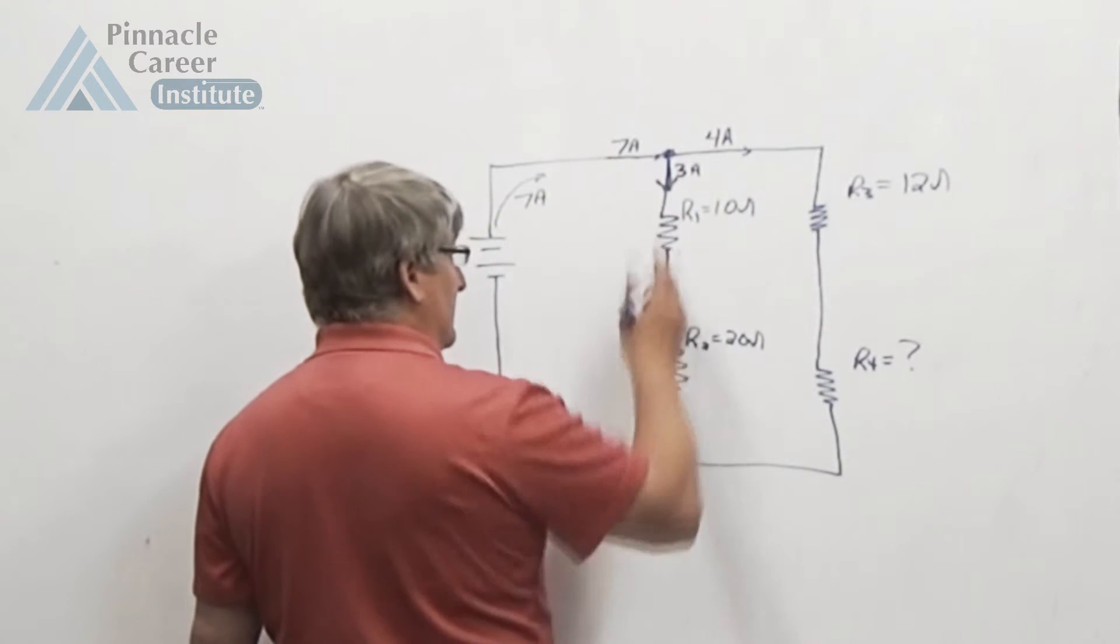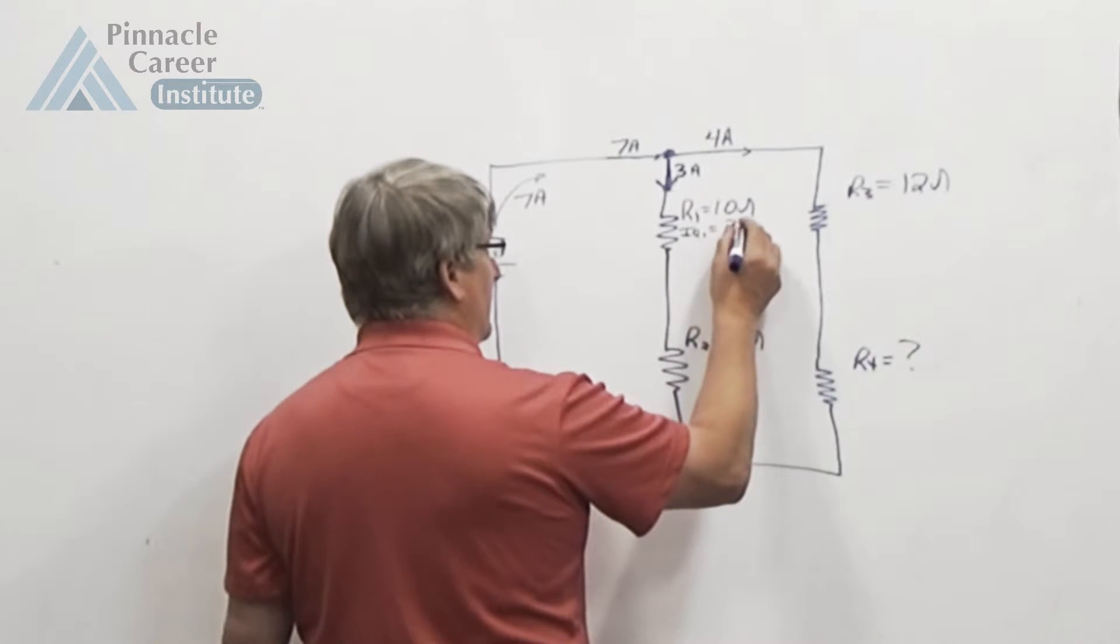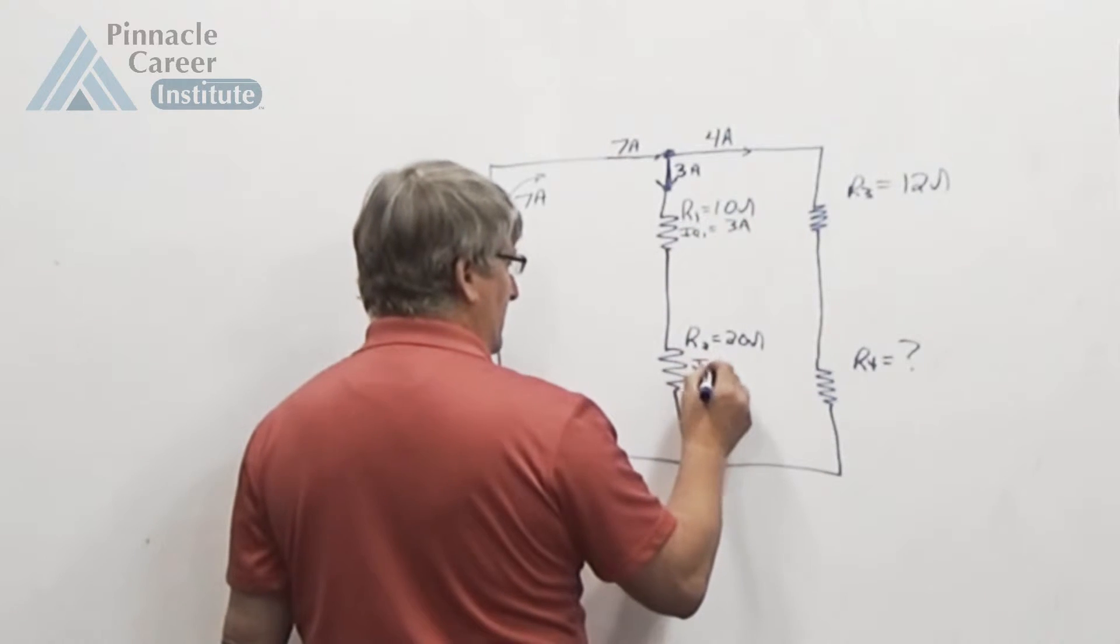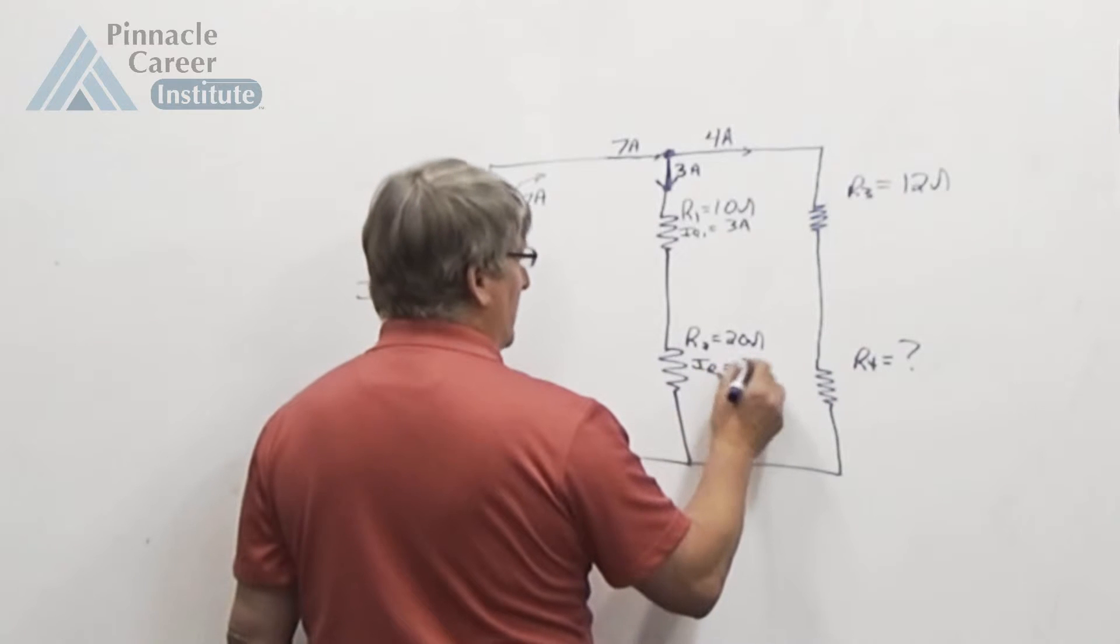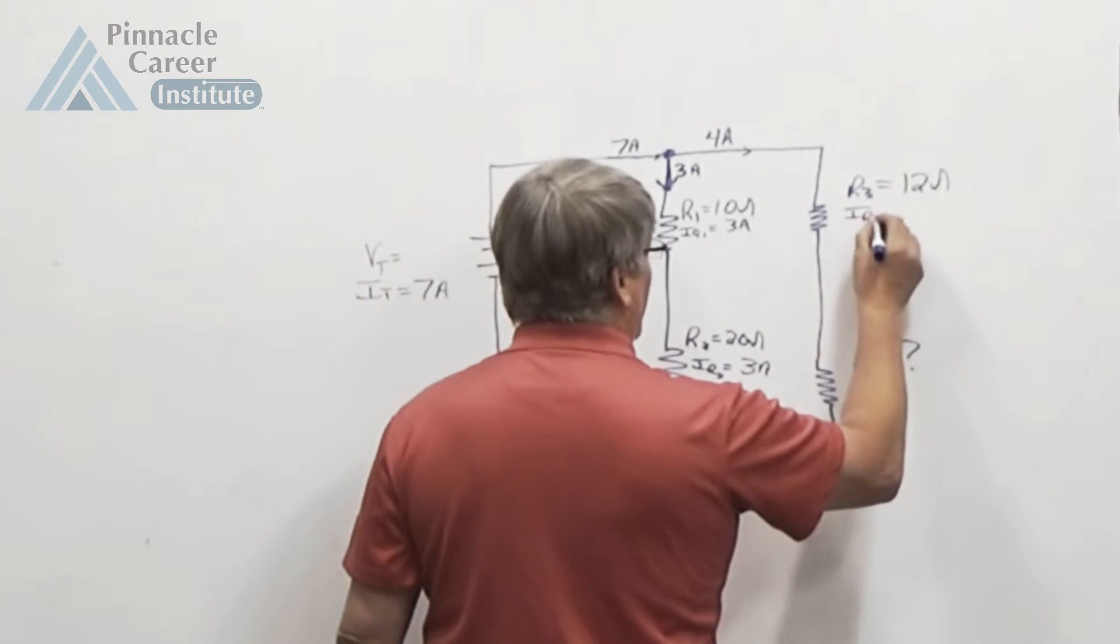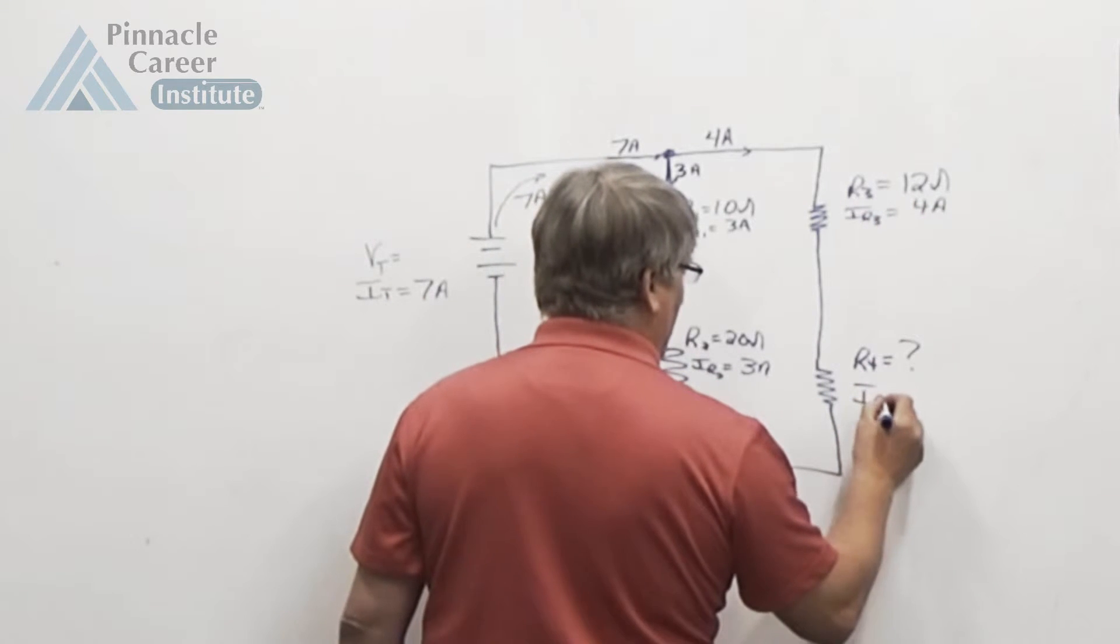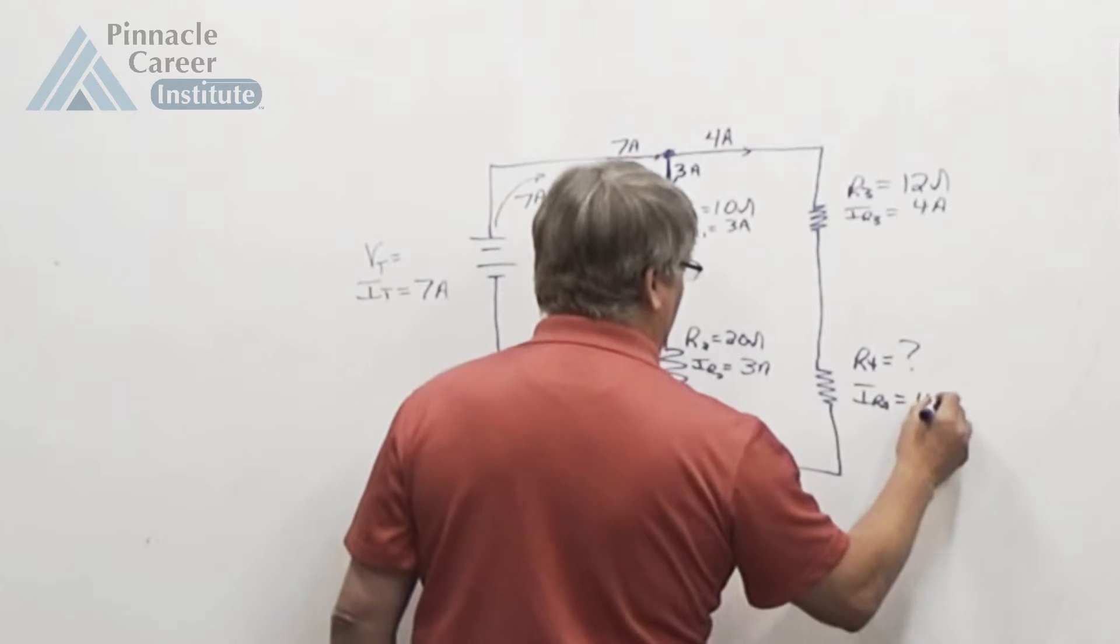So again, current in series is the same. So IR1 here equals 3 amps, IR2 equals 3 amps, IR3 equals 4 amps, and IR4 equals 4 amps. We're getting there. Now I can solve for the voltage drops on 3 of these because I got I and R on these, right?